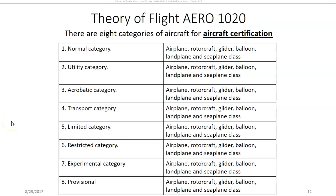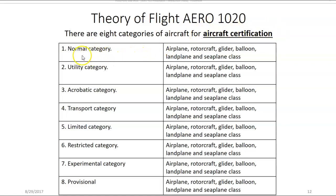Aircraft category and class when discussing aircraft certification is a little different. Notice that category as it applies to aircraft certification includes normal, utility, acrobatic, transport, limited, restricted, experimental, and provisional. The category of an aircraft as it applies to aircraft certification has to do with how the aircraft will be used.